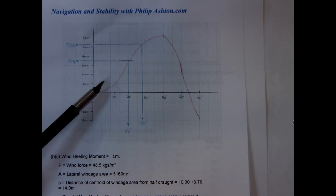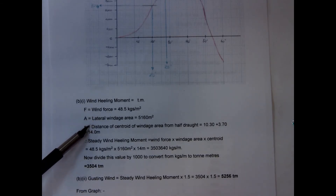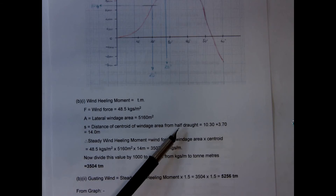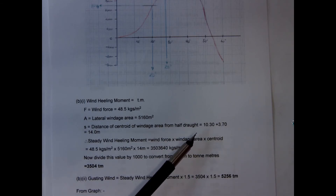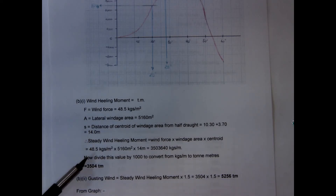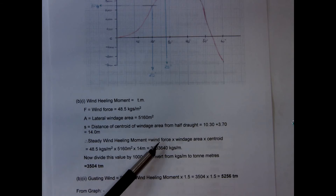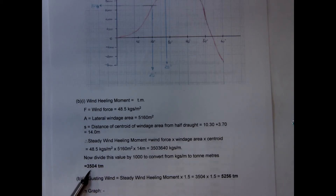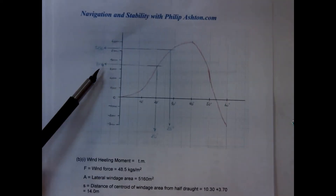Now we need to calculate the righting moments for the steady wind and the gusting wind to read off the angles of heel. The wind force is 48.5, windage area 5160, and the distance of the centroid of the windage area from half the draft is 10.3 plus half the draft 3.7, giving 14. The steady wind heeling moment is force times windage area times the centroid, divided by 1000 to give tonnes-metres, which gives 3504.